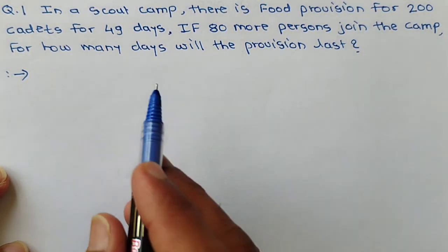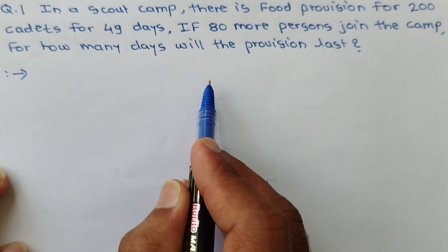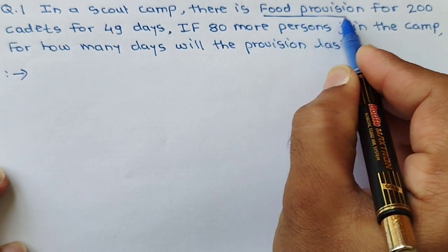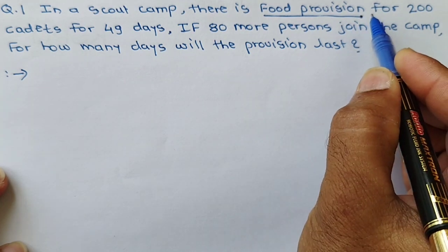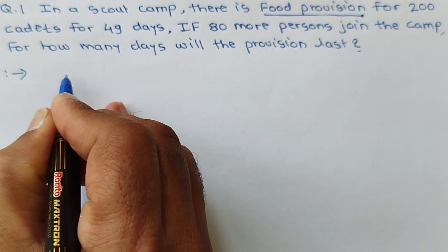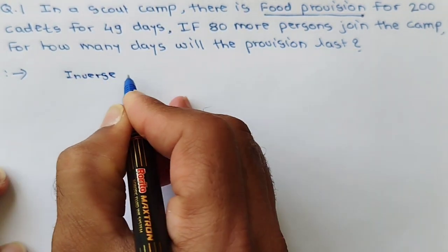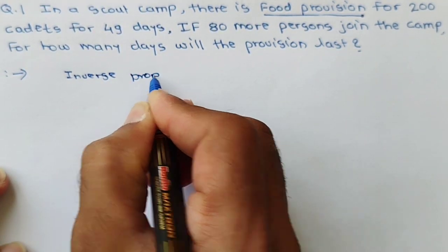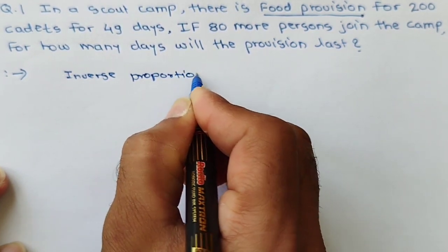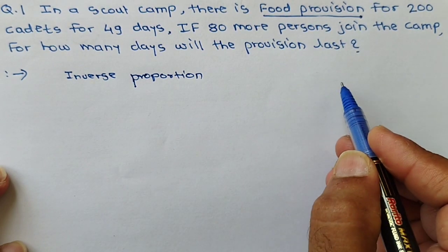This question is of inverse proportion, because the full provision is fixed. In inverse proportion, if one quantity increases, the other decreases.